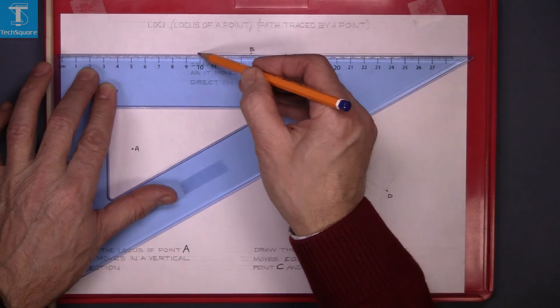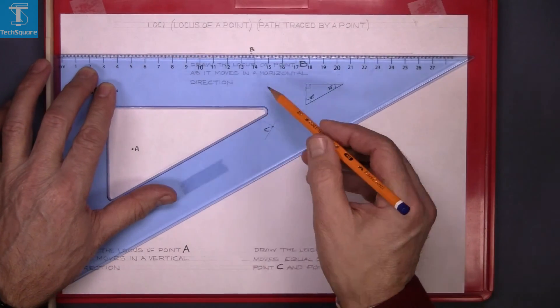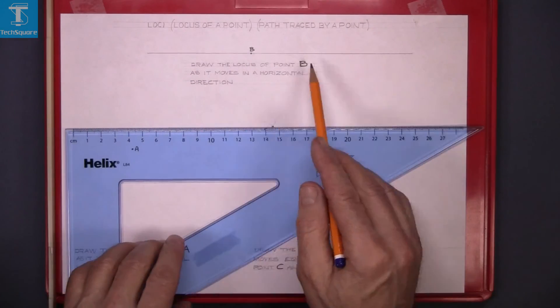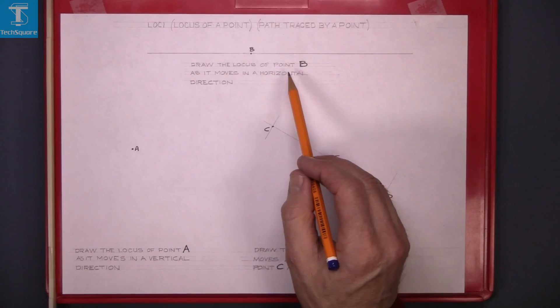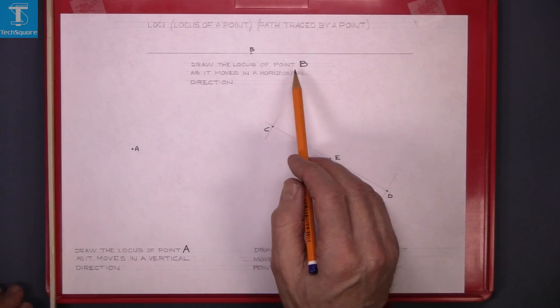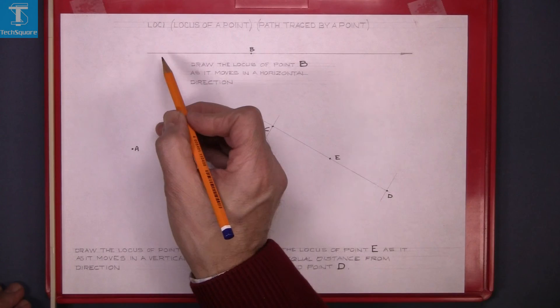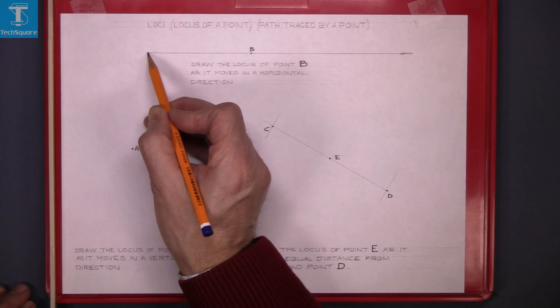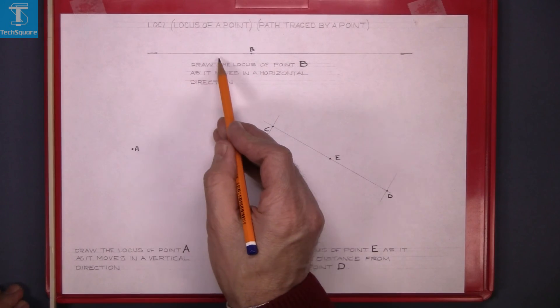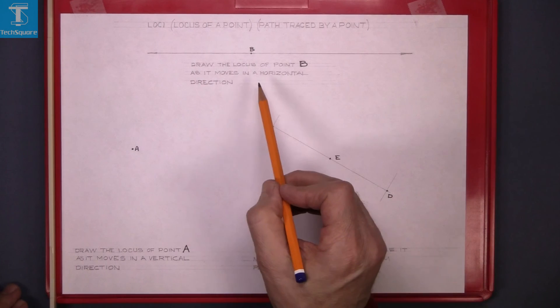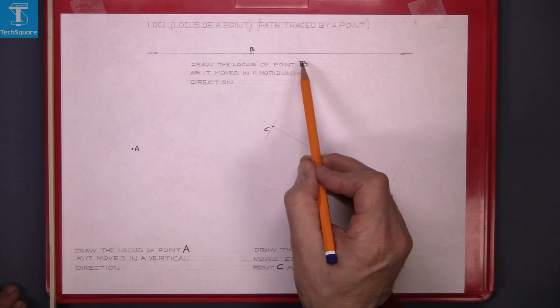It could also be in the opposite direction. That line there is the path taken by point B as it moves in a horizontal direction. I'll just put an arrow on here to indicate that it could continue on. That's the answer to that question.